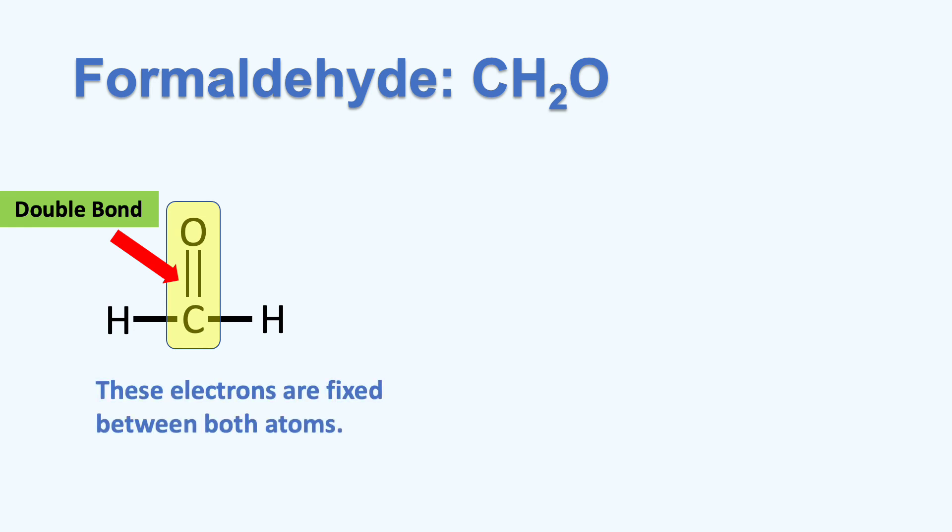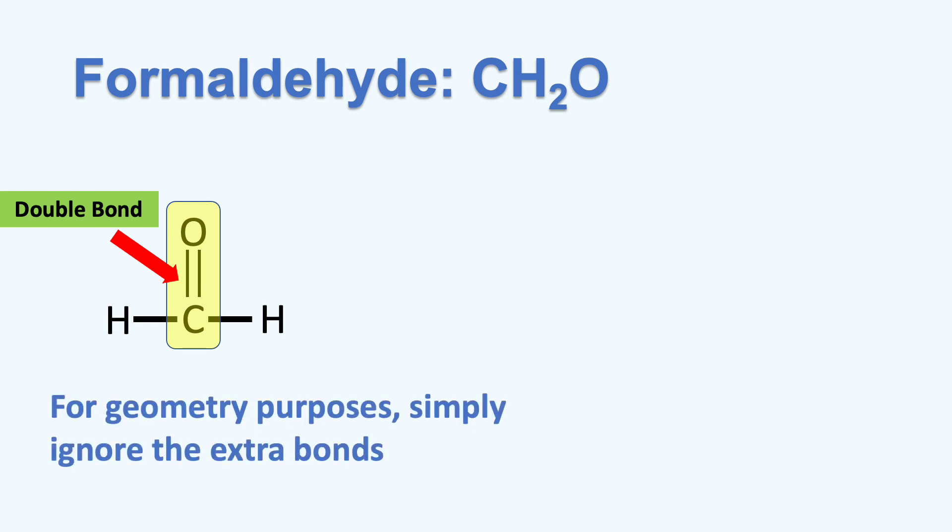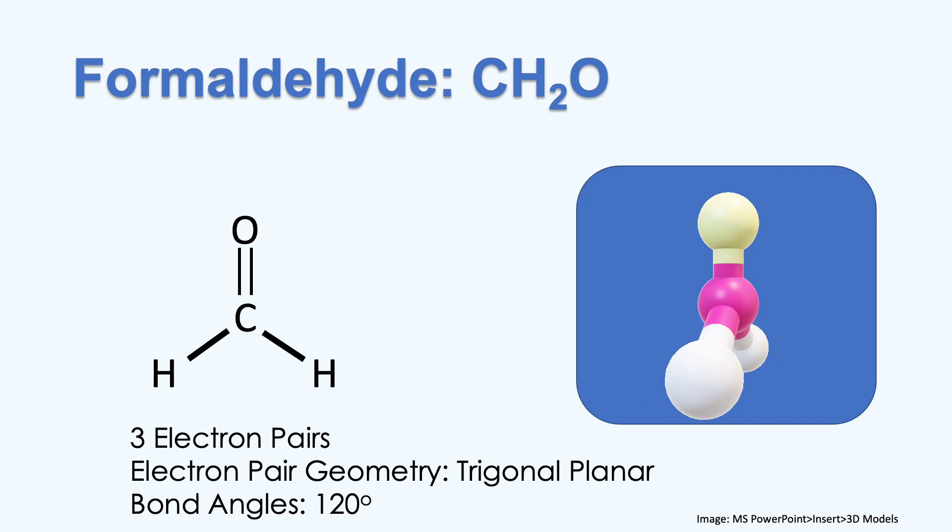These electrons are fixed between both atoms. They will not repel. For geometry purposes, simply ignore the extra bonds. Here, we count three electron pairs and an electron pair geometry of trigonal planar with bond angles of 120 degrees.